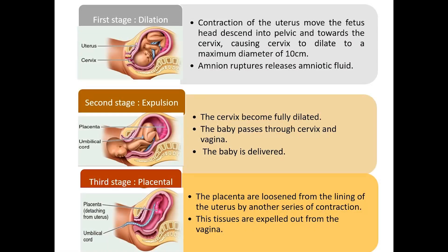The first stage, dilation: contraction of the uterus moves the fetus head, descending into the pelvis and towards the cervix, causing the cervix to dilate to a maximum diameter of 10 cm. The amnion ruptures, releasing amniotic fluid. The second stage, expulsion: the cervix becomes fully dilated, and the baby passes through the cervix and vagina and is delivered. The third stage, placental: the placenta is loosened from the lining of the uterus by another series of contractions, and these tissues are expelled out through the vagina.